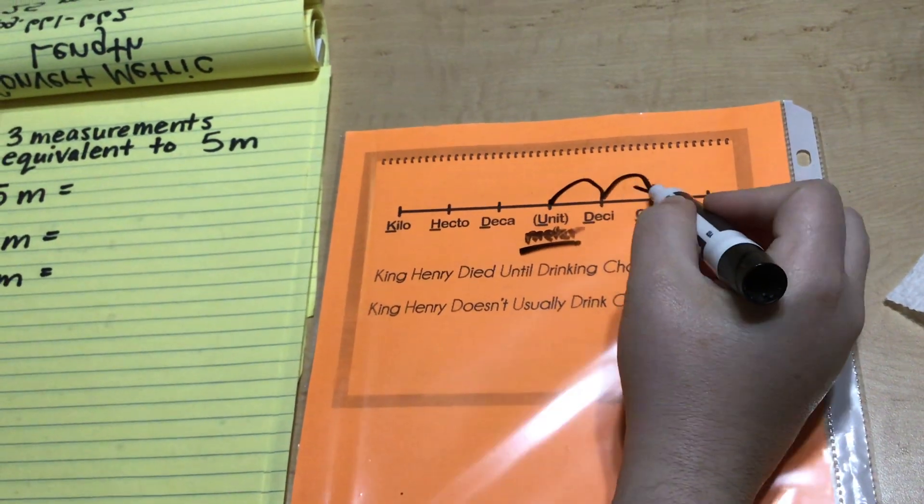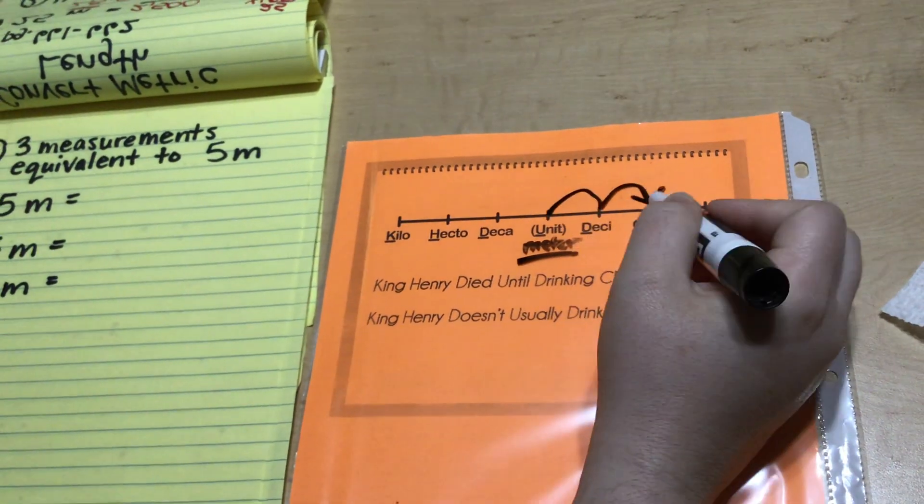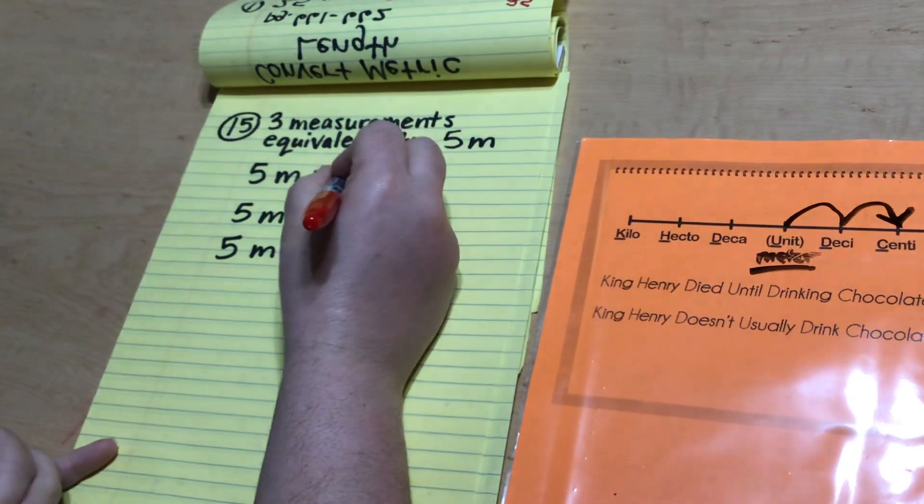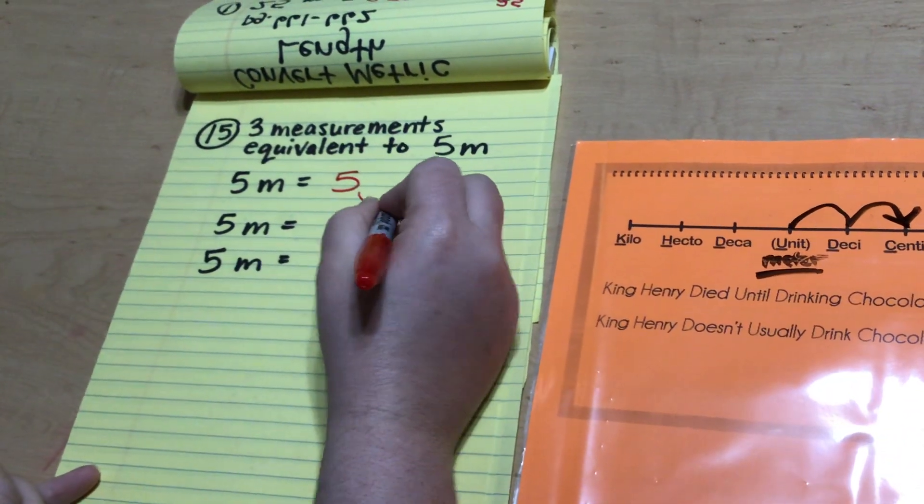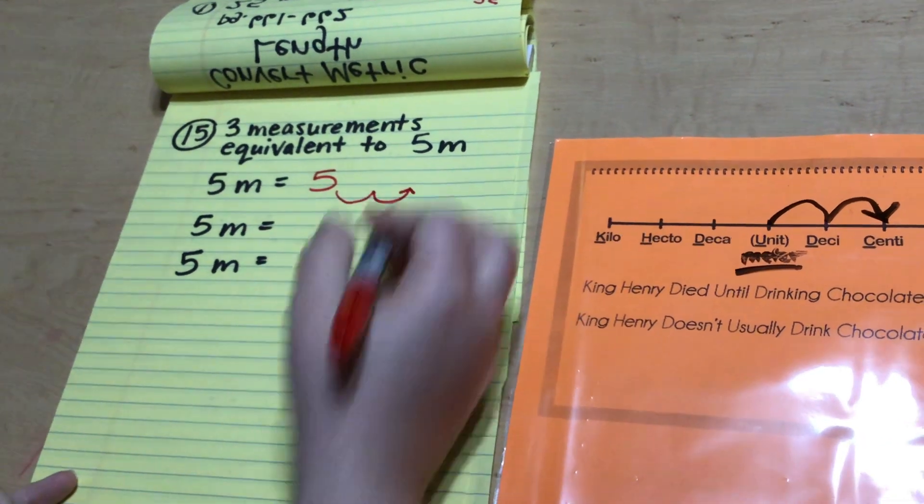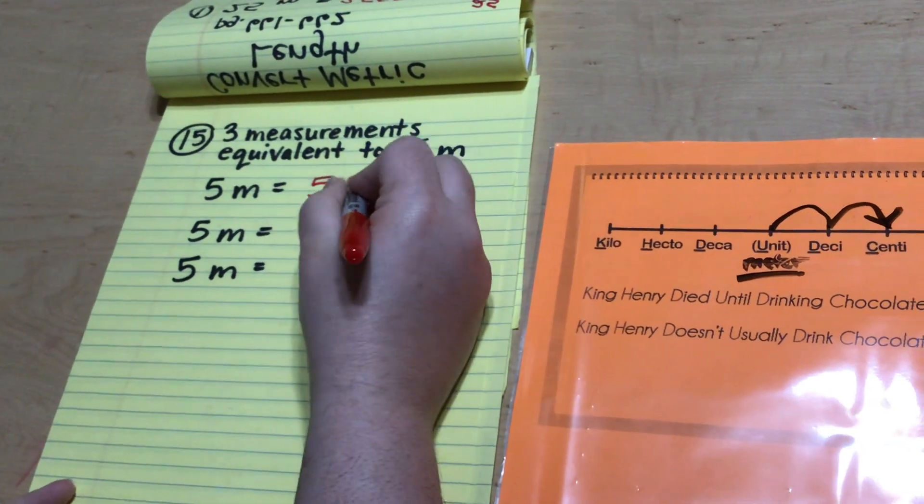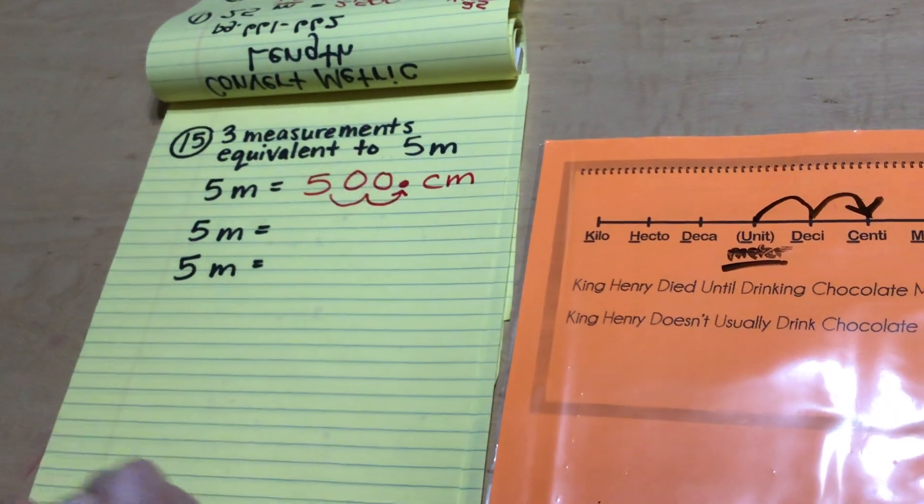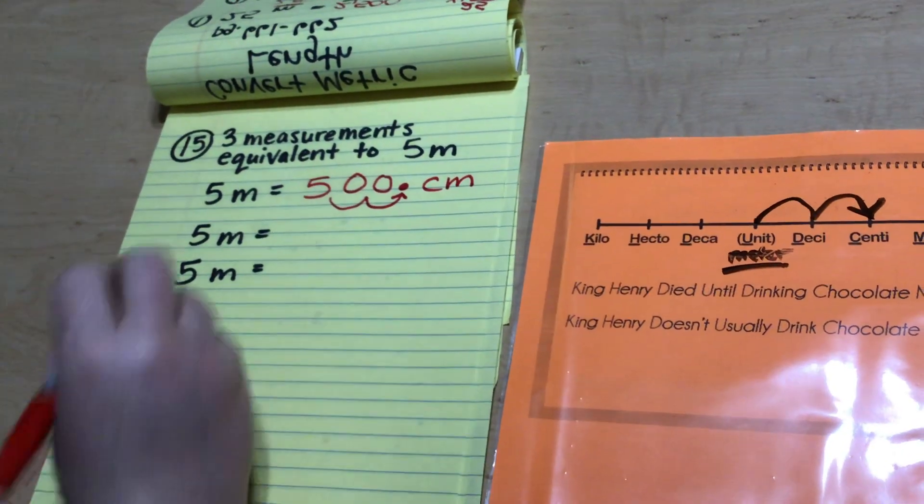Let's say two jumps to the right gives me centimeters. So I would say this is five and I would say one, two jumps to the right. Here's my new decimal that gives us centimeters. So 500 centimeters.